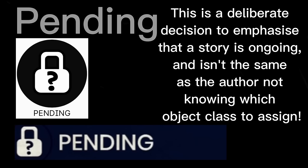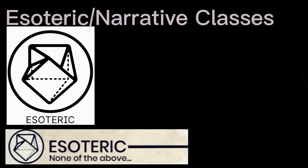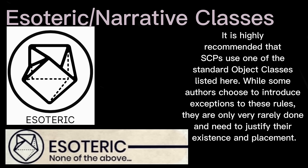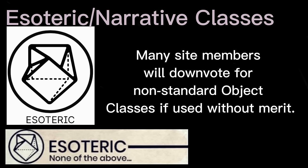Esoteric or narrative classes — also occasionally referred to as narrative classes — are object classes that do not fall into any of the above sections. They are generally only used once and are created to further the narrative in a particular SCP. It is highly recommended that SCPs use one of the standard object classes listed. While some authors choose to introduce exceptions, they are only very rarely done and need to justify their existence and placement. Many site members will downvote for non-standard object classes if used without merit.